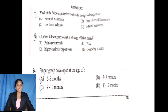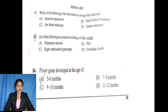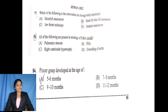Which of the following is the intervention for foreign body aspiration? The Heimlich maneuver is used. Upward or backward thrust is performed so the foreign body is expelled. Option A, the Heimlich maneuver, is correct.